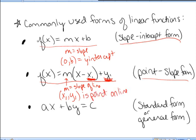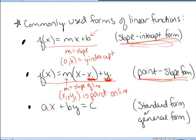Notice that in the slope-intercept form, b gives you a very specific point on the line — the y-intercept. But in the point-slope form, x1 comma y1 is any point on the line. There are an infinite number of points on any line, and this could be any one of them.